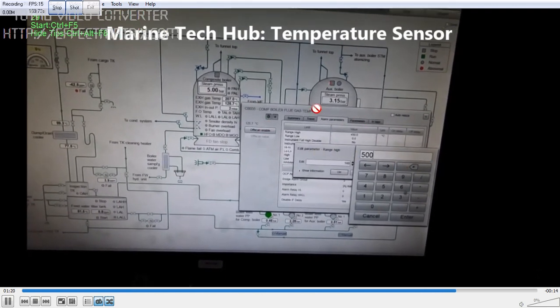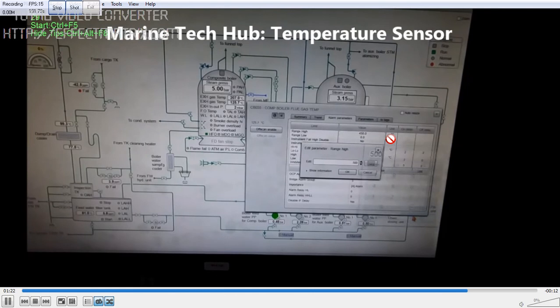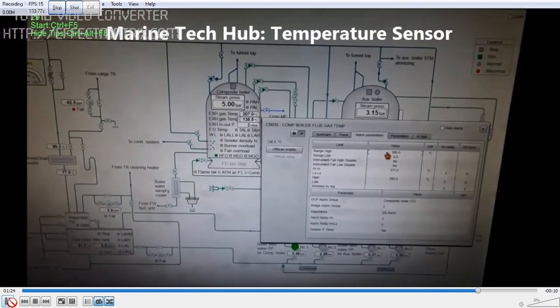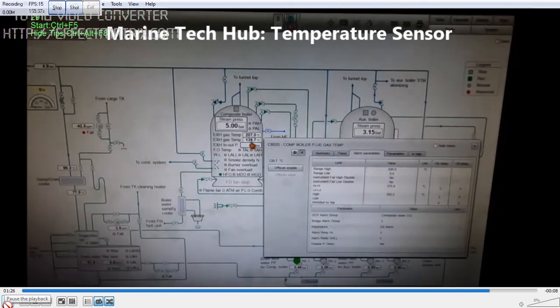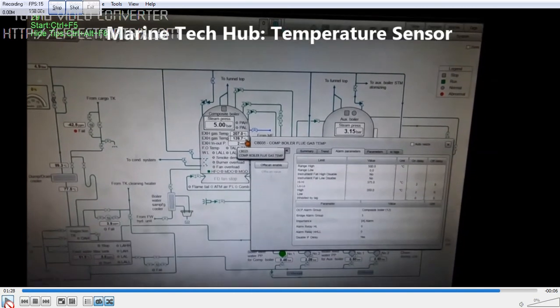So you can always make a mistake when you are putting the range. So be careful. So this is one part very important for all electrical officers on board the ship. So you put the correct range and also do not forget to put the alarm range also.